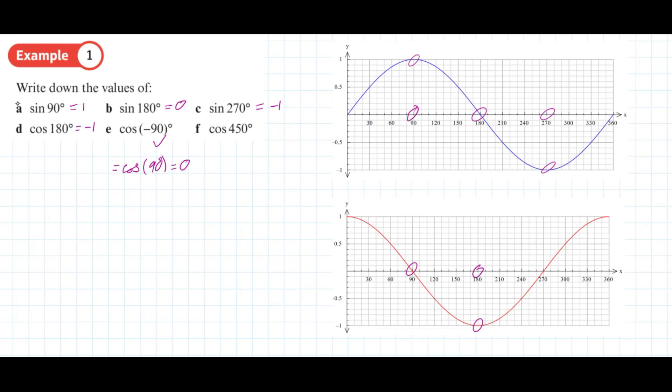As for the last one, cosine of 450 degrees - well, that's not actually on our graph. One thing to note about these graphs is that they repeat every 360 degrees. So if we notice that 450 degrees is 360 degrees above 90, we can say that the cosine of 450 must be the same as the cosine of 90 degrees, so it's also 0.